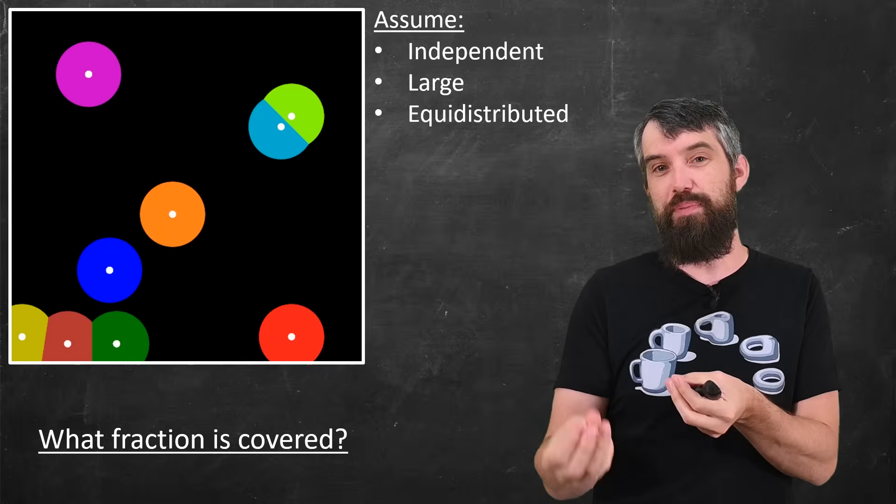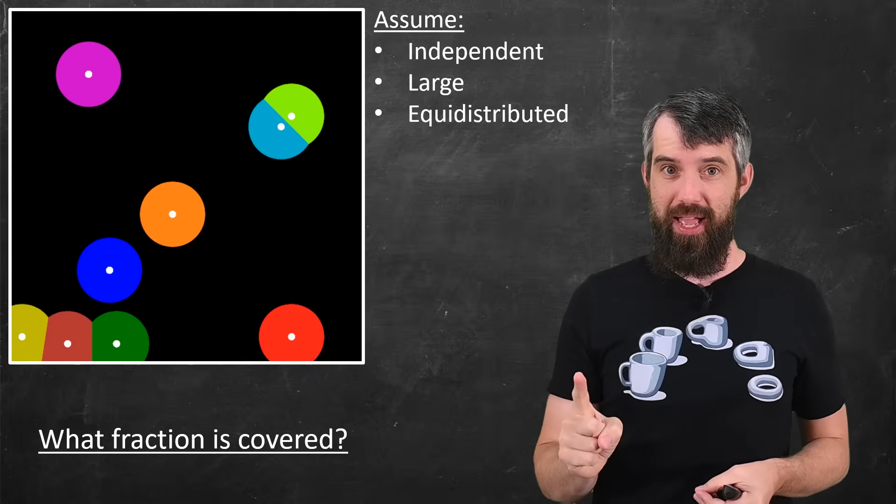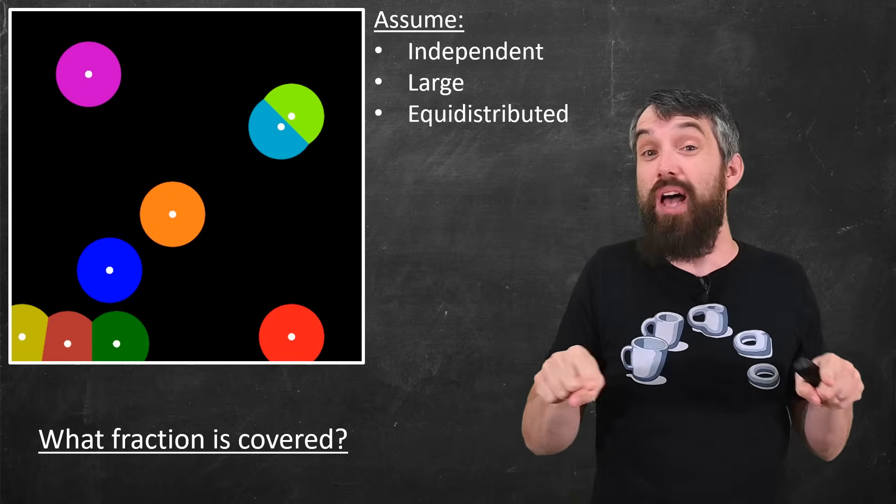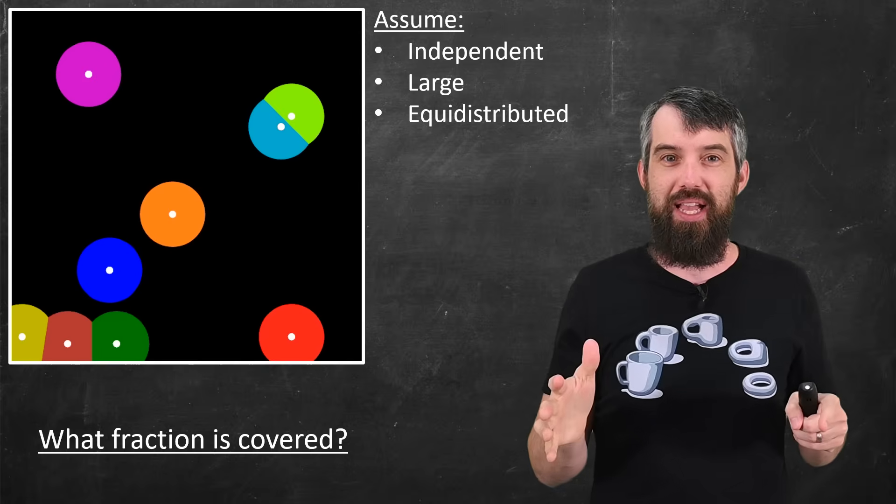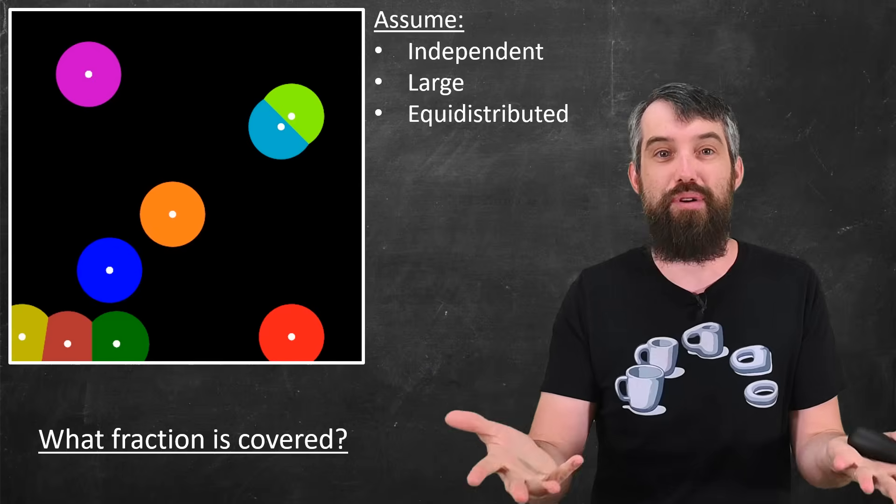There's no other constraints between the points. Except I'm going to demand this thing called equidistributed. And what equidistributed means is that if I look into any sub portion of my original space, that the number of points within that space is the same for any other number of space.